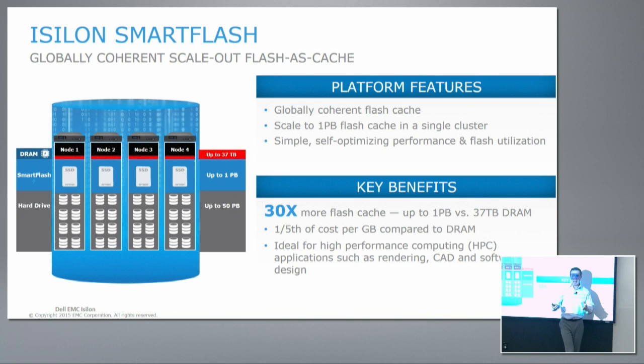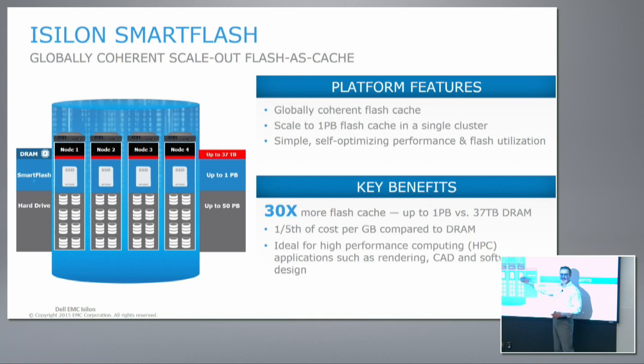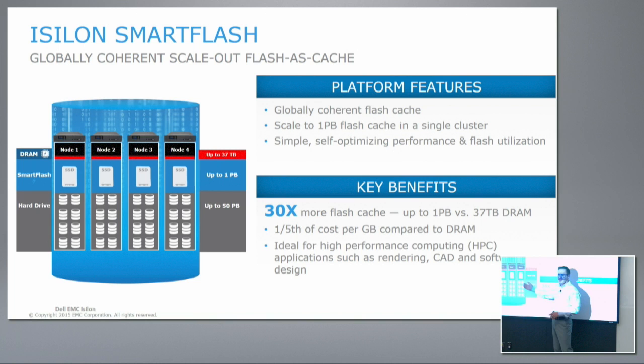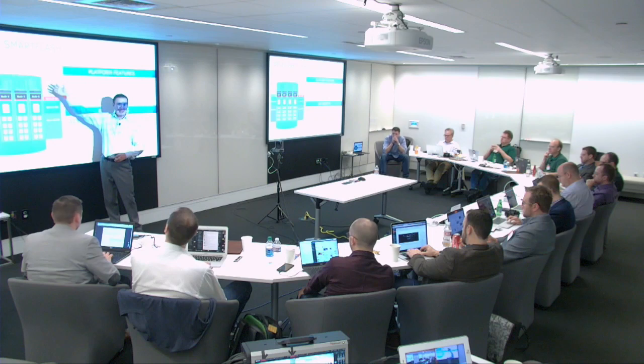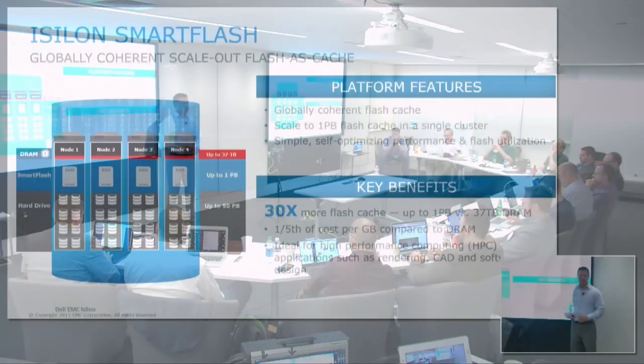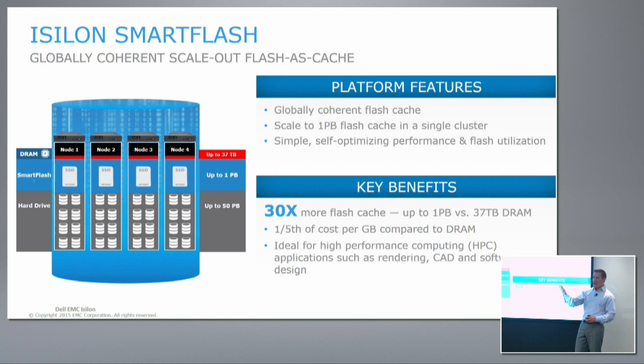What we've also done is recognize that the L2 cache is limited to the size of the memory — maybe 256 gigs in a node — but you may have multiple terabytes of flash in that node. Instead of evicting the L2 block information back onto spinning disk, we actually evict it into a flash cache. So as I'm reading data out of the cluster, it moves into high-performance RAM, and then it's evicted not onto spinning disk but into flash, so subsequent reads of that data are at flash latencies.